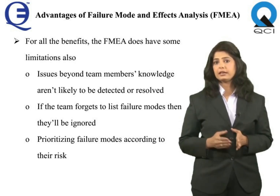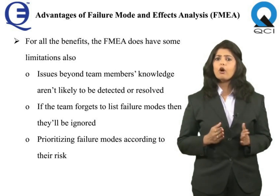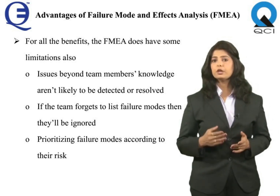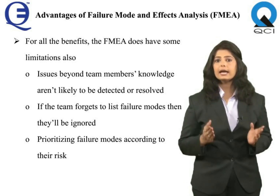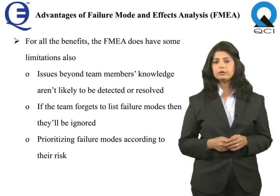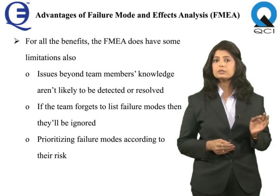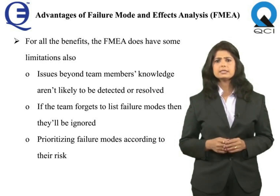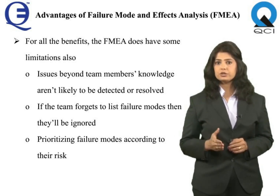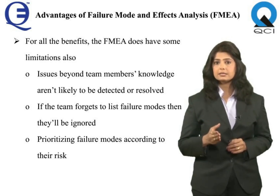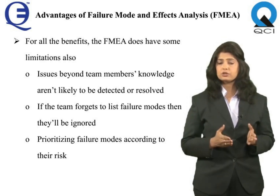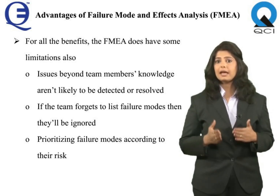Limitations of FMEA: issues beyond team members' knowledge are not likely to be detected or resolved, constituting unknown issues. If the team forgets to list failure modes, those will be ignored. In both cases, the result is a failure waiting to occur. Another limitation is that the FMEA's foundation for prioritizing failure modes by risk will not remove them — other actions outside of the FMEA may be needed.